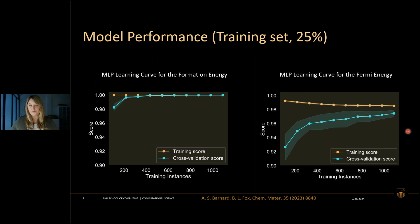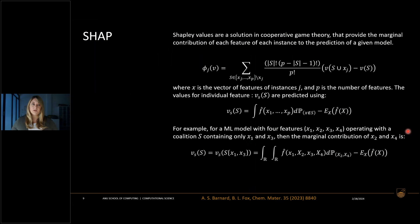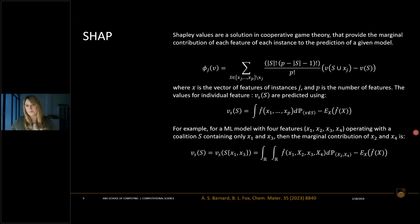So how do we explain how and why different features were used to develop these high-performing predictions? Shapley values are a solution from cooperative game theory, developed by Lloyd Shapley in the 1950s — he later received a Nobel Prize in Economics. For a machine learning model with four different features, operating on a coalition S containing only x1 and x2, the marginal contribution for the remaining excluded features can be described by an expectation function integral. This has been coded up and is available on GitHub, with Monte Carlo sampling to reduce the factorial computational complexity.